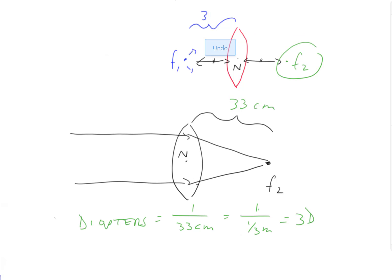That is how lens power is defined — experimentally, as when parallel light is passed through the lens, where does it come to a focus? That should give us a good head start for further lens discussions going forward. Thanks.